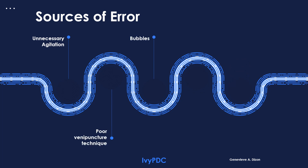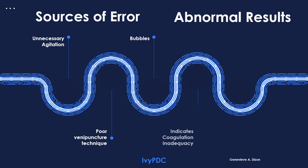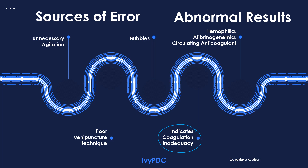Some sources of error when performing coagulation time include: unnecessary delay, which may prolong coagulation time; poor venipuncture technique, which causes hemolysis or tissue thromboplastin to mix with blood, shortening coagulation time; and bubbles entering the syringe, which may also shorten coagulation time. Abnormal results may indicate inadequacy in the coagulation pathway or coagulation factors. Examples of such conditions include hemophilia, afibrinogenemia, and circulating anticoagulants.